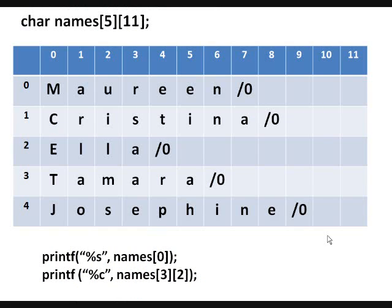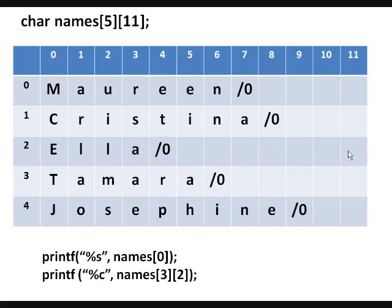Supposing your two-dimensional array is called 'names': the first dimension is five for the five strings it can store, and the second dimension is eleven for the number of characters it can hold. This works, but it's not really the best approach because it's very limiting as to the length of the string. It also wastes memory cells — if the name is very short like 'Ella', six memory cells are wasted. And if the name is very long, not all characters can be accommodated and part of them will be truncated, because the length of the string is fixed and not flexible.